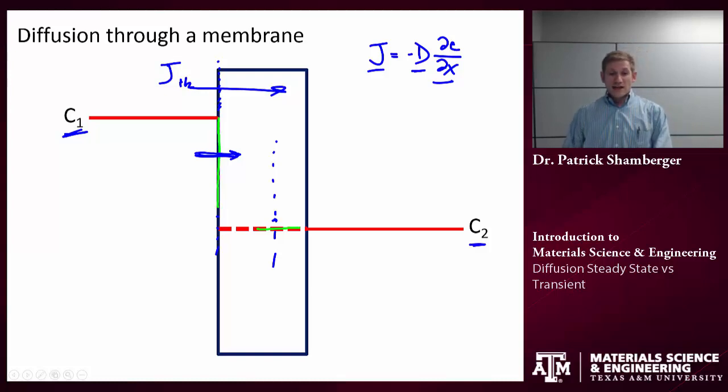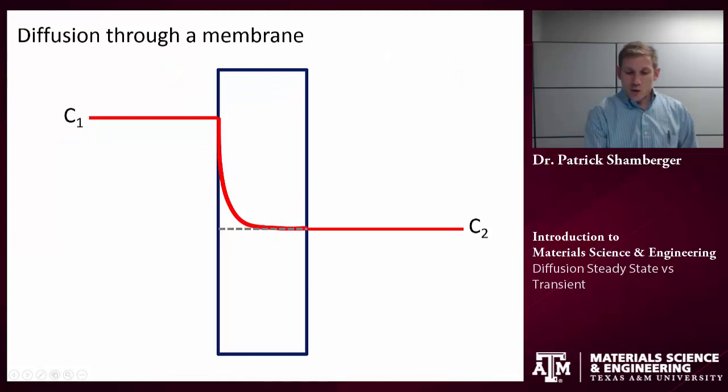So what that means is that if I let the system sit for some short period of time, I'm going to start increasing the concentration in this intermediate region. I have a high flux on the left side and a small flux on the right side. So the concentration in between those two is going to have to increase.